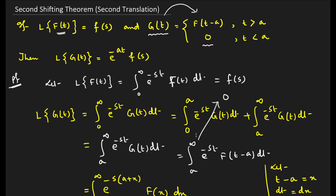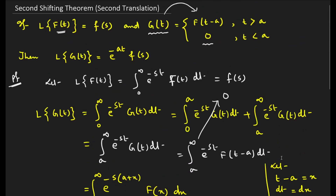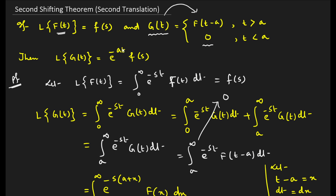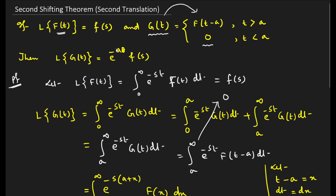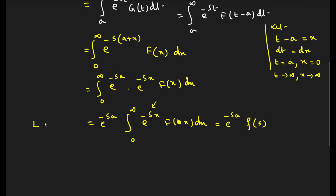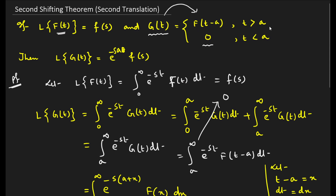So we get e^(−sa)·F(s). The answer is e^(−as)·F(s). So if g(t) = f(t−a) for t > a and 0 for t < a, then the Laplace transform of g(t) is e^(−as)·F(s). This is our second shifting theorem.